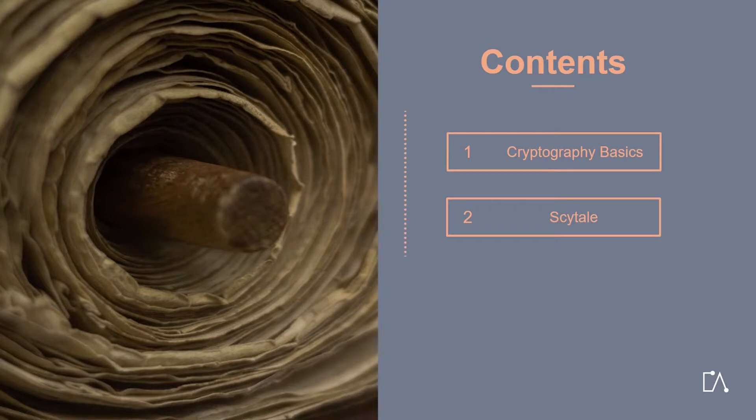The first part of the e-learning course on classical cryptography starts with providing an overview of cryptography in general. In the further course of these e-learnings, we will present you with ciphers from the past, which were once heavily used, but for the most part are no longer secure. Nevertheless, the applied techniques are still highly interesting today, also with a focus on modern cryptography. Hence, we will first have a look at the Scytale, one of the first encryption methods.